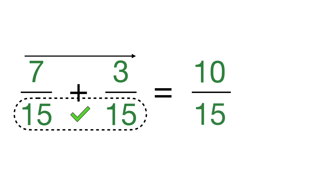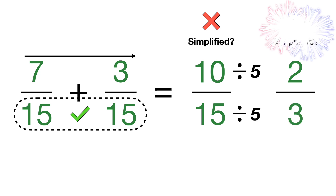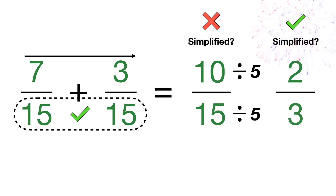Step 3: keep the denominator the same — it's 15. Step 4: is this fully simplified? 10/15 is not fully simplified. We can find a common multiple of 5 between 10 and 15, so we divide both by 5. 10 divided by 5 is 2 and 15 divided by 5 is 3. This is now fully simplified as 2/3, since 2 and 3 are both prime numbers with no common multiples.